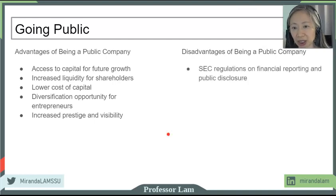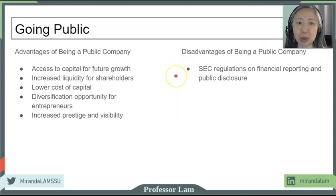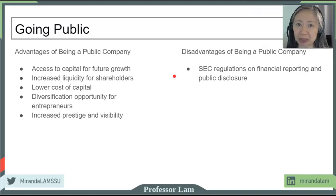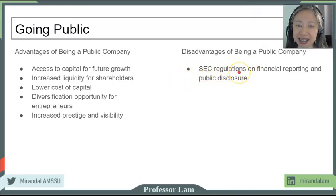There are also disadvantages of becoming a public company. One is regulations and reporting. As a CEO of a private firm you can make statements and you'll be fine, but as the CEO of a public firm, when you make statements you are subject to SEC regulations.